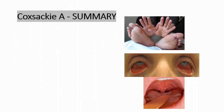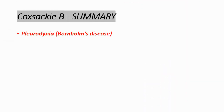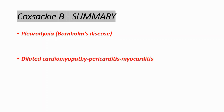Here is a quick summary. In Coxsackie A, you will see hand, foot and mouth disease, acute hemorrhagic conjunctivitis, and herpangina. In Coxsackie B virus, you can see pleurodynia with unilateral chest pain, dilated cardiomyopathy, pericarditis, myocarditis, and lastly, inflammation of the liver — hepatitis.